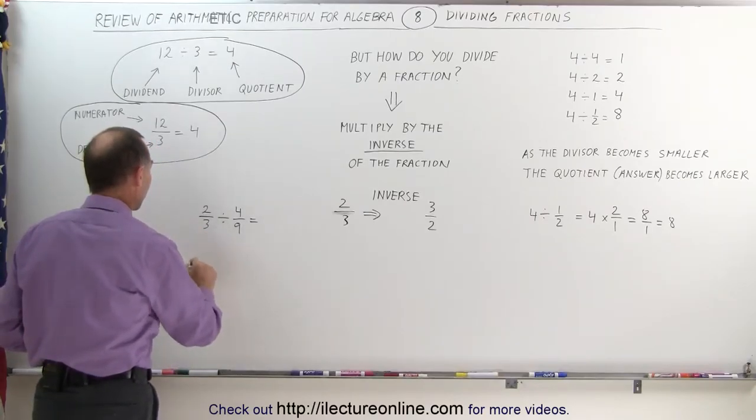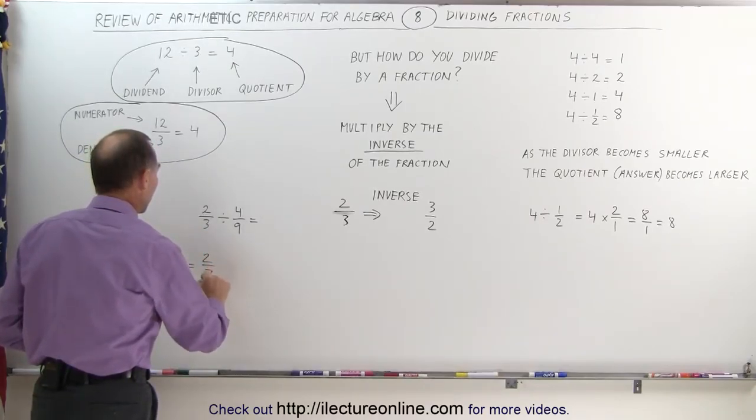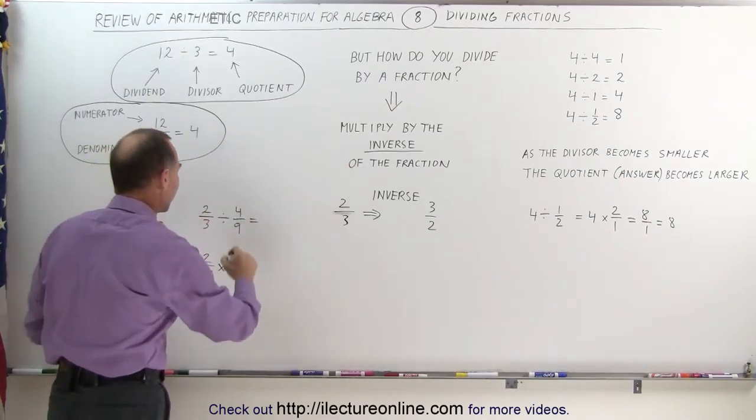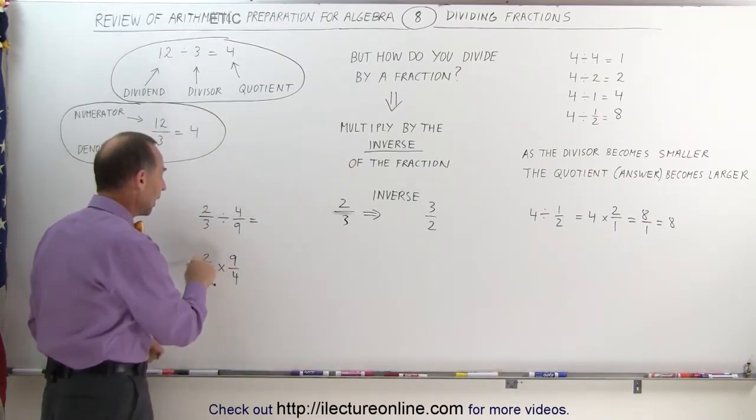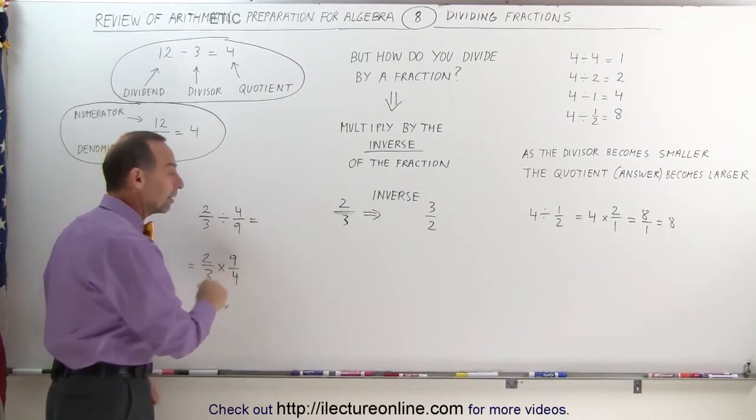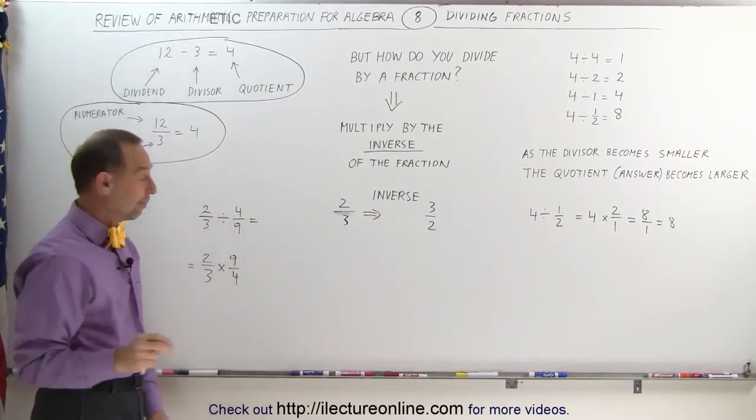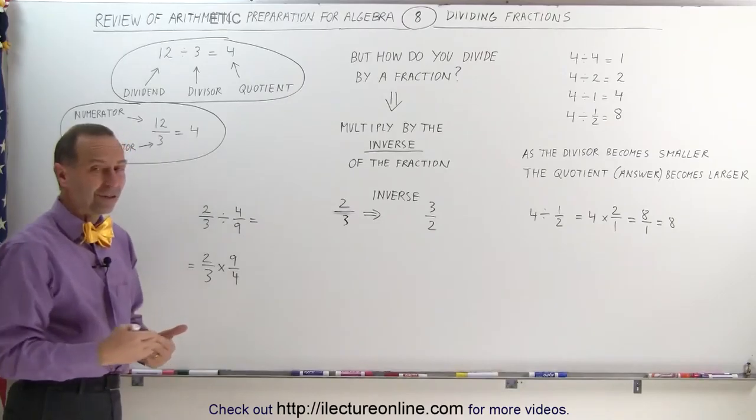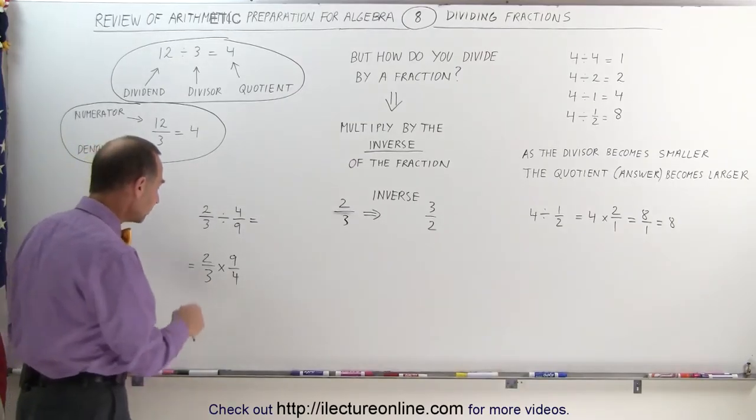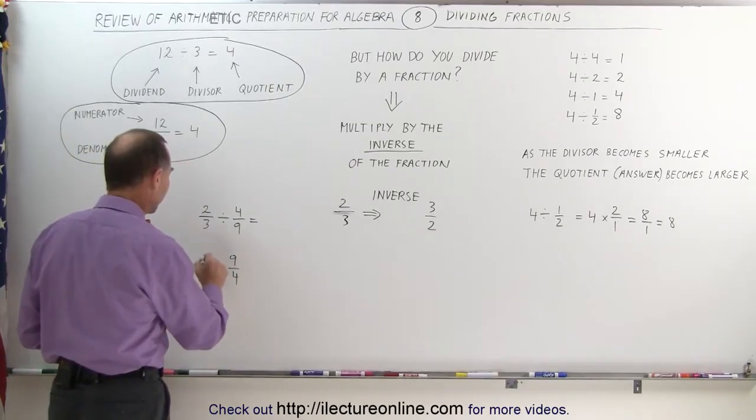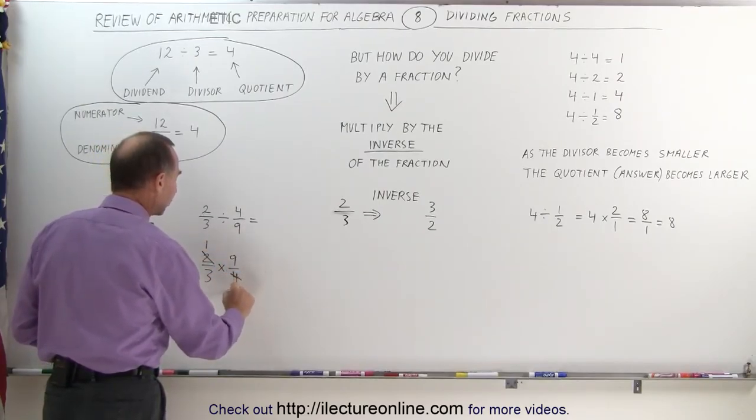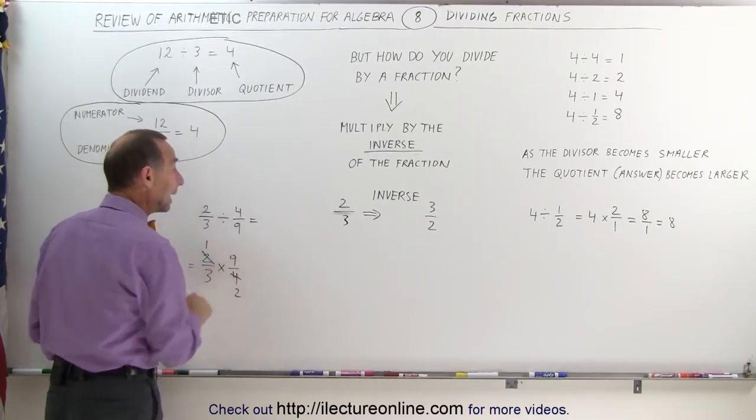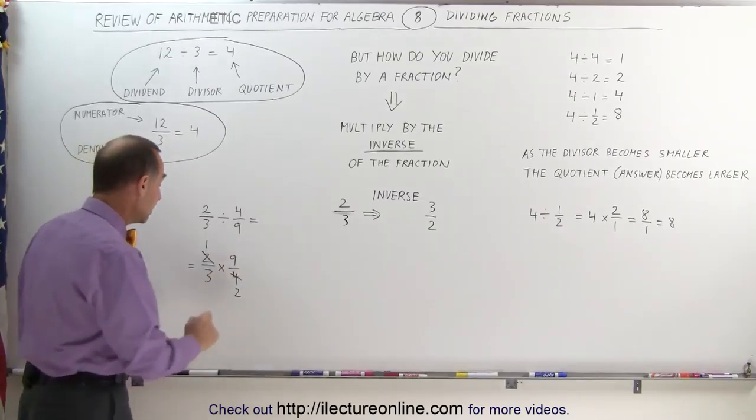So for a more representative example, let's divide 2 thirds by 4 ninths. Again, the way to do that is by multiplying by its inverse, so this becomes the same as 2 thirds multiplying times the inverse of that. Simply flip the fraction around and get 9 over 4. So now you would multiply the numerators together, multiply the denominators together—or, before you do that, you may want to simplify just like what we've done before.